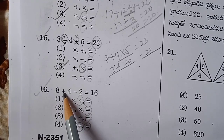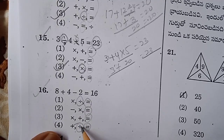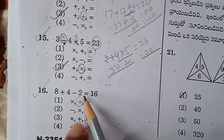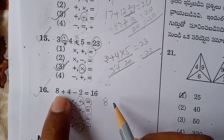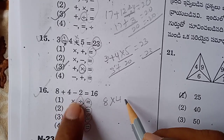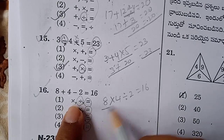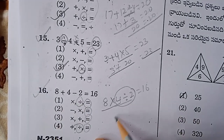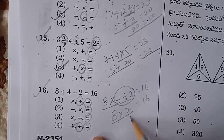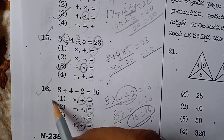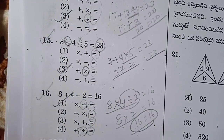So let us see here — we expect division in second place. Check first one: 8 plus — replace with into 4. Minus is replaced by divided by, equals 2, equals 16. By BODMAS rule, 8 into 4 divided by 2 is 2 equals 16. 8 twos are 16. 16 equals 16. Option 1 is the right answer for question number 16.